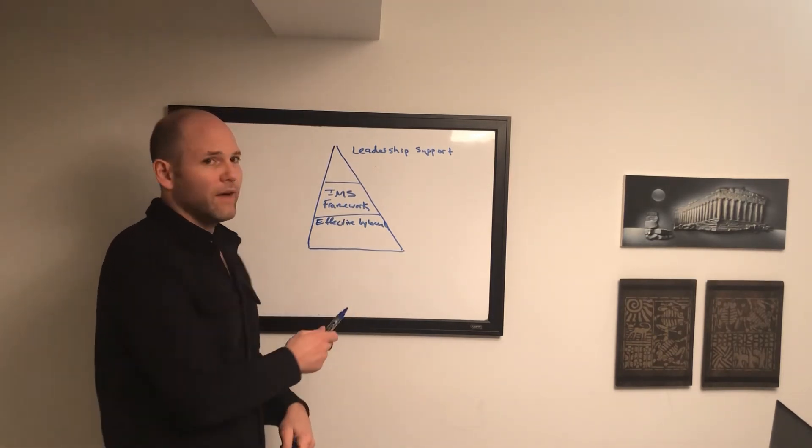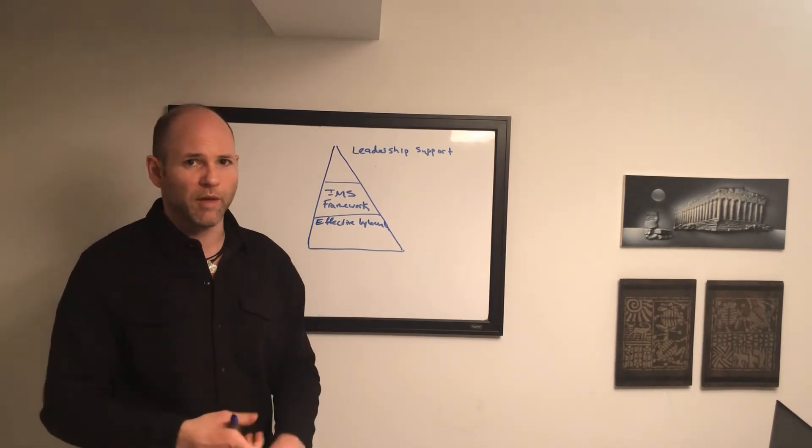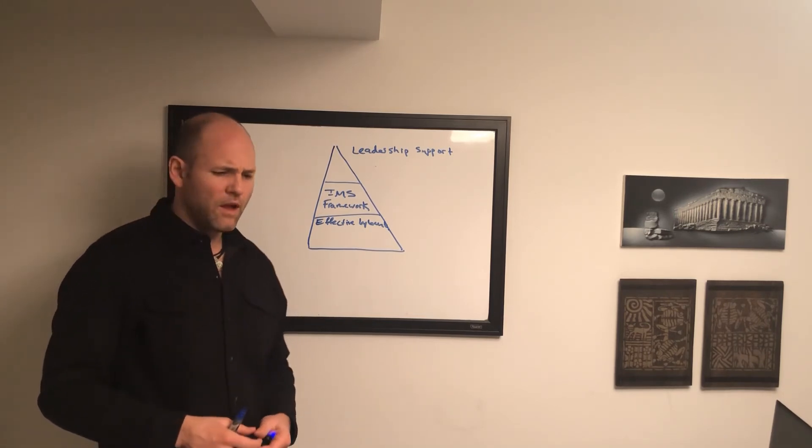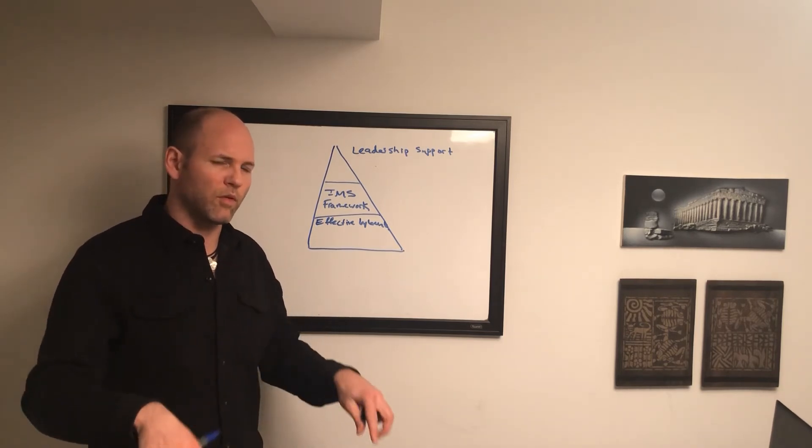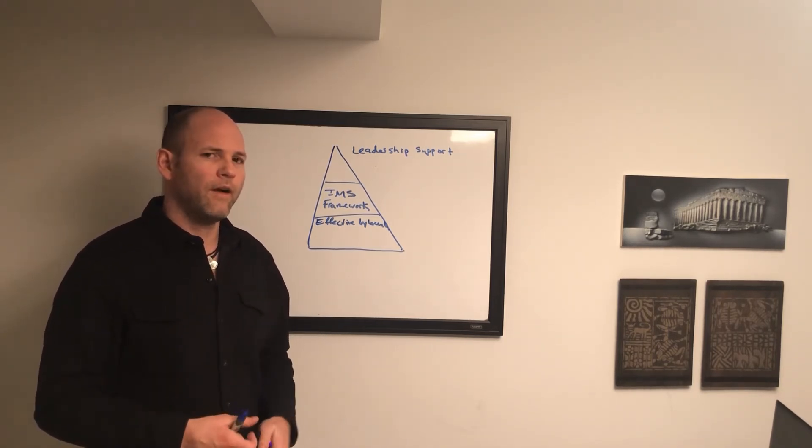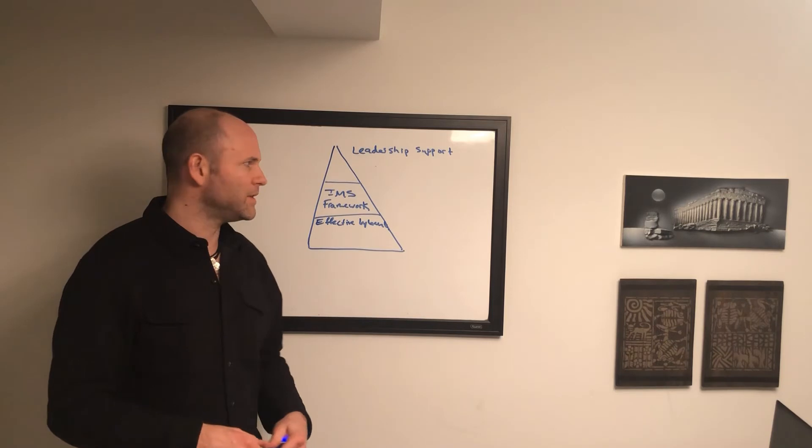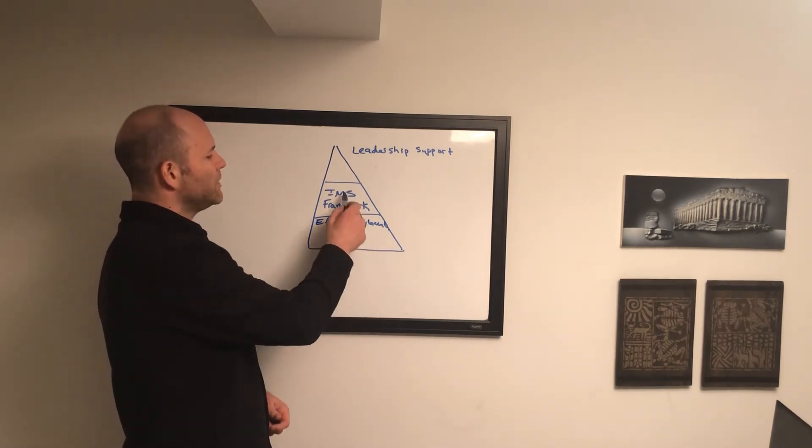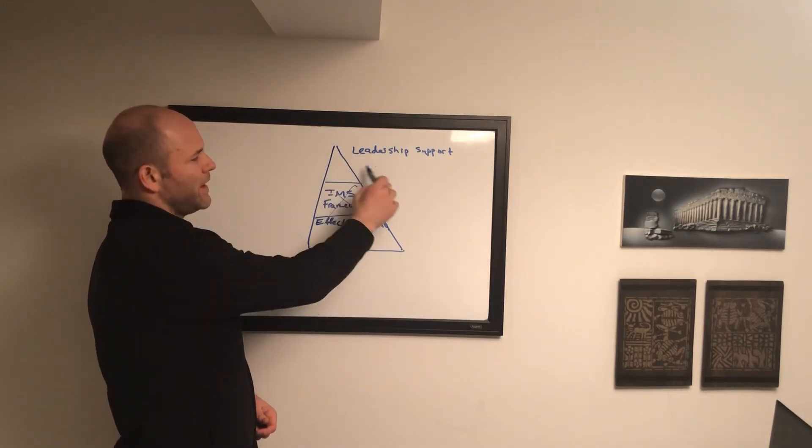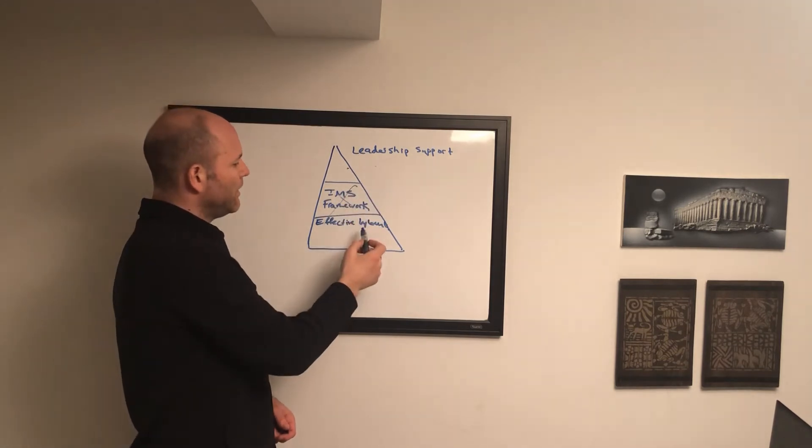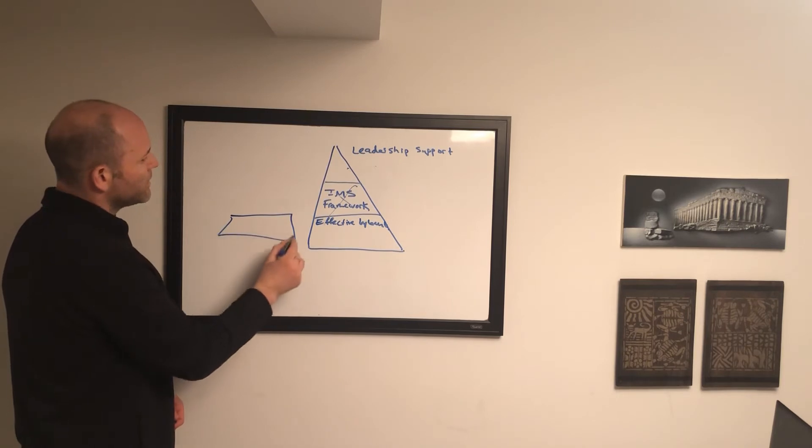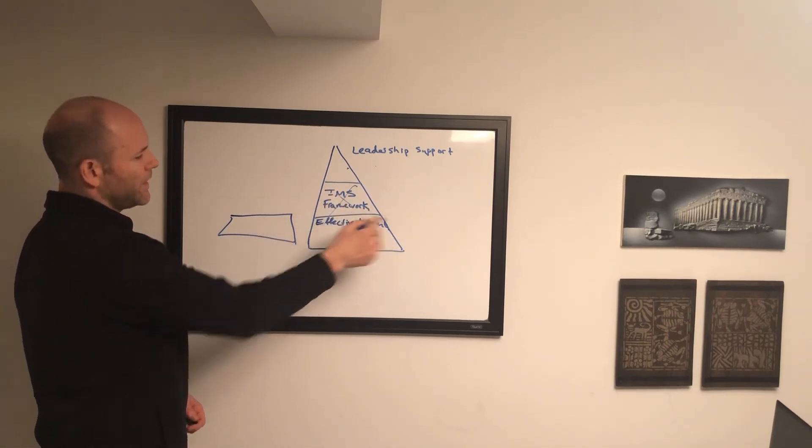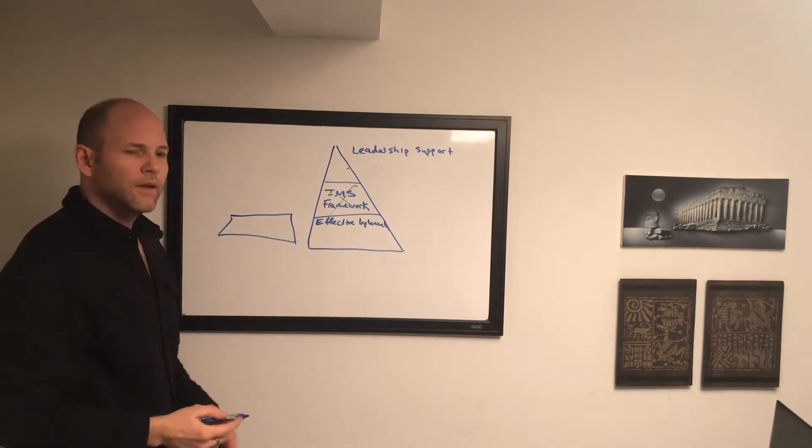Down here is where we have things like procedures, program plans, work instructions, these kind of things. This is where you have engaged employees, where people are working. What happens is companies don't have this. They might have this, but it's not really backed up. And then all the different departments start building their own way because they don't have the IMS tying it together.